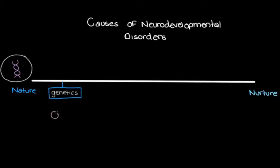Changes in our DNA — like if our mom or dad, or maybe both of them, pass on mutated genes — is one of the possible events that can lead to a neurodevelopmental disorder. We're looking at broad causes of neurodevelopmental disorders in general, and we'll look at some specific examples shortly. For now, let's think broadly to get a sense of what overarching causes can lead to neurodevelopmental disorders.